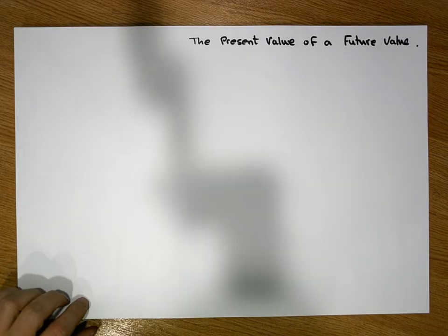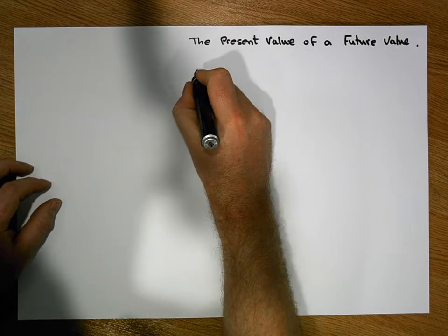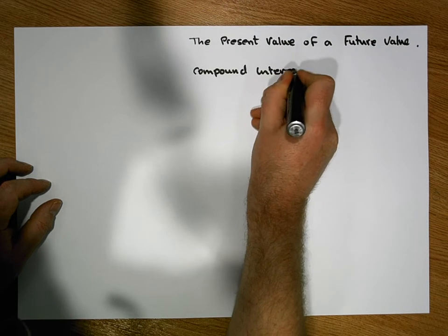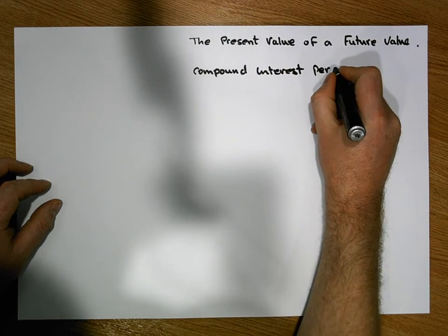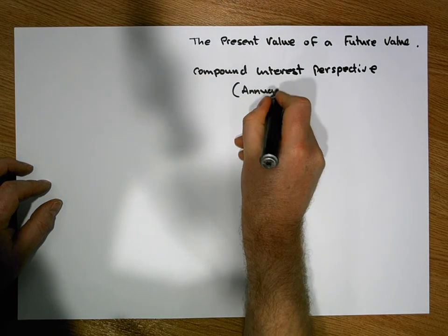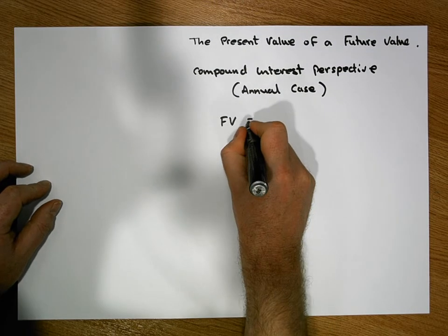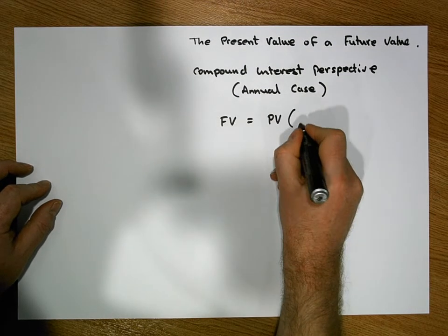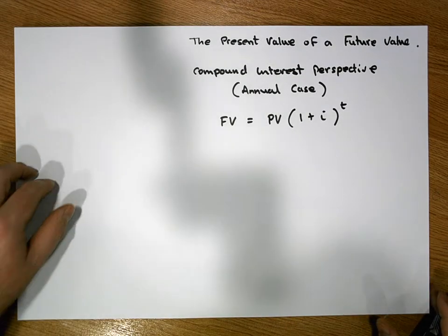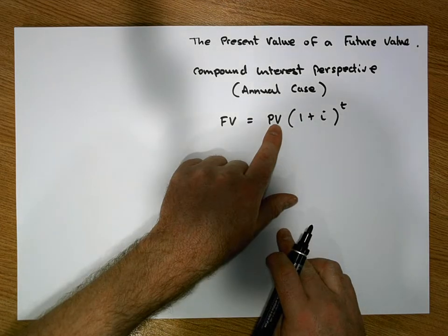From a compound interest perspective — in particular the annual case — to calculate the future value, the future value is simply equal to the present value times 1 plus the interest rate raised to the power of t.